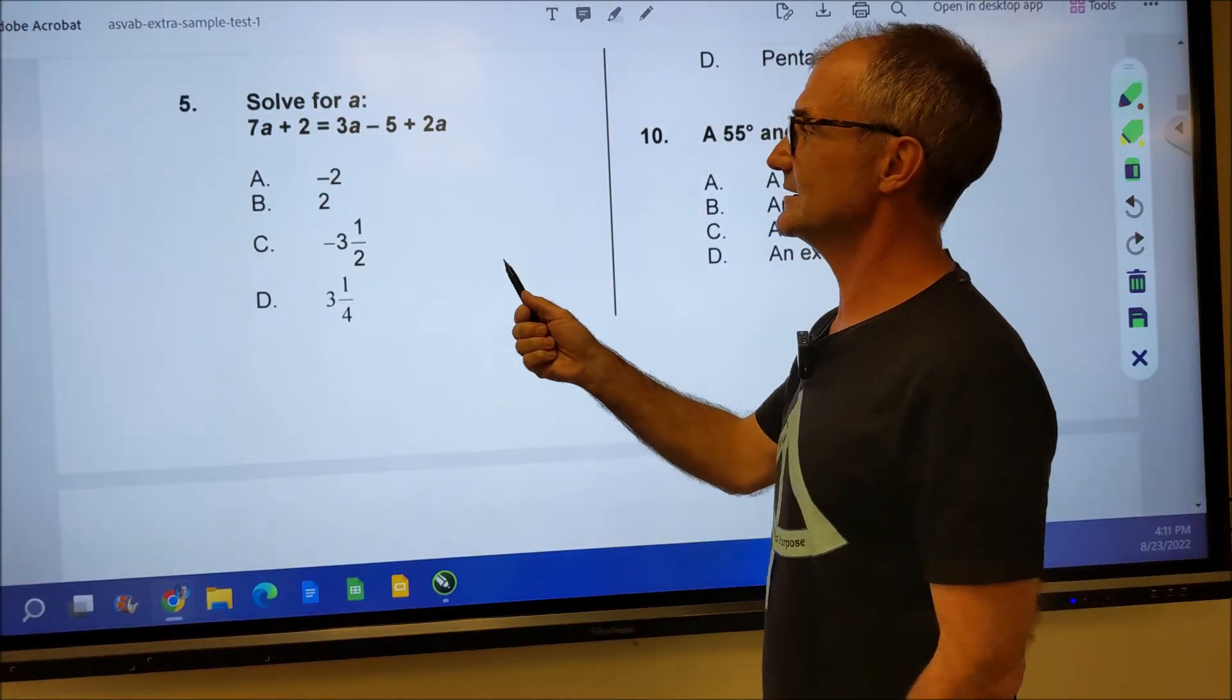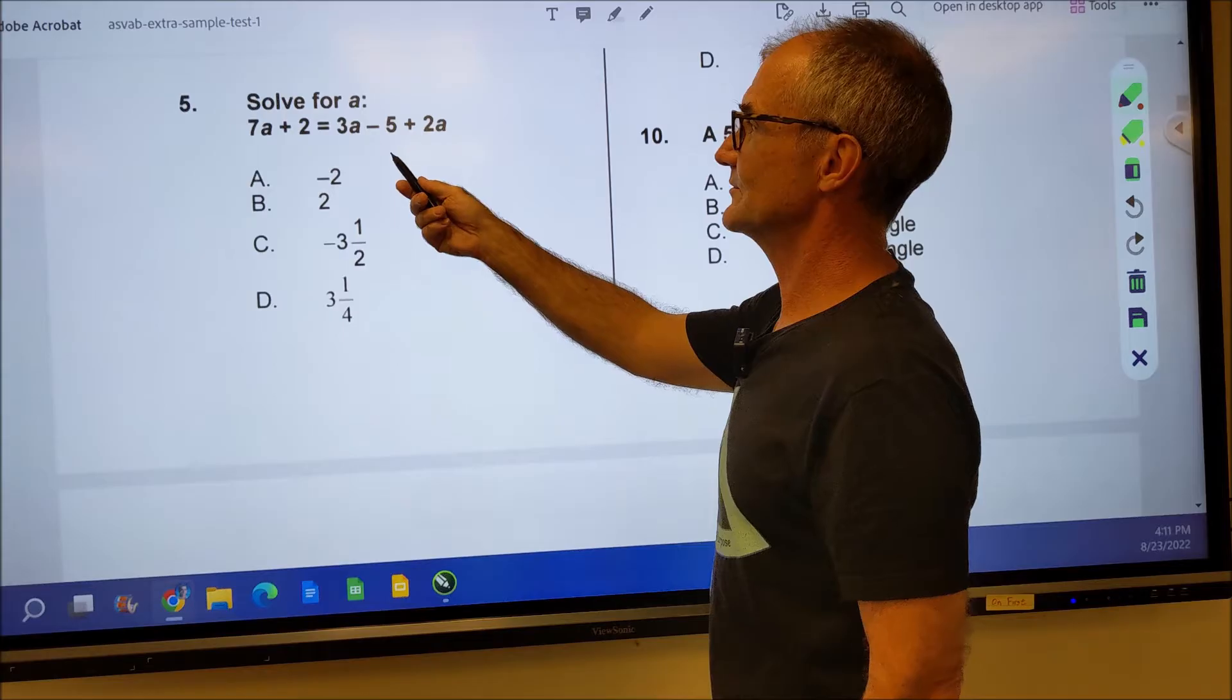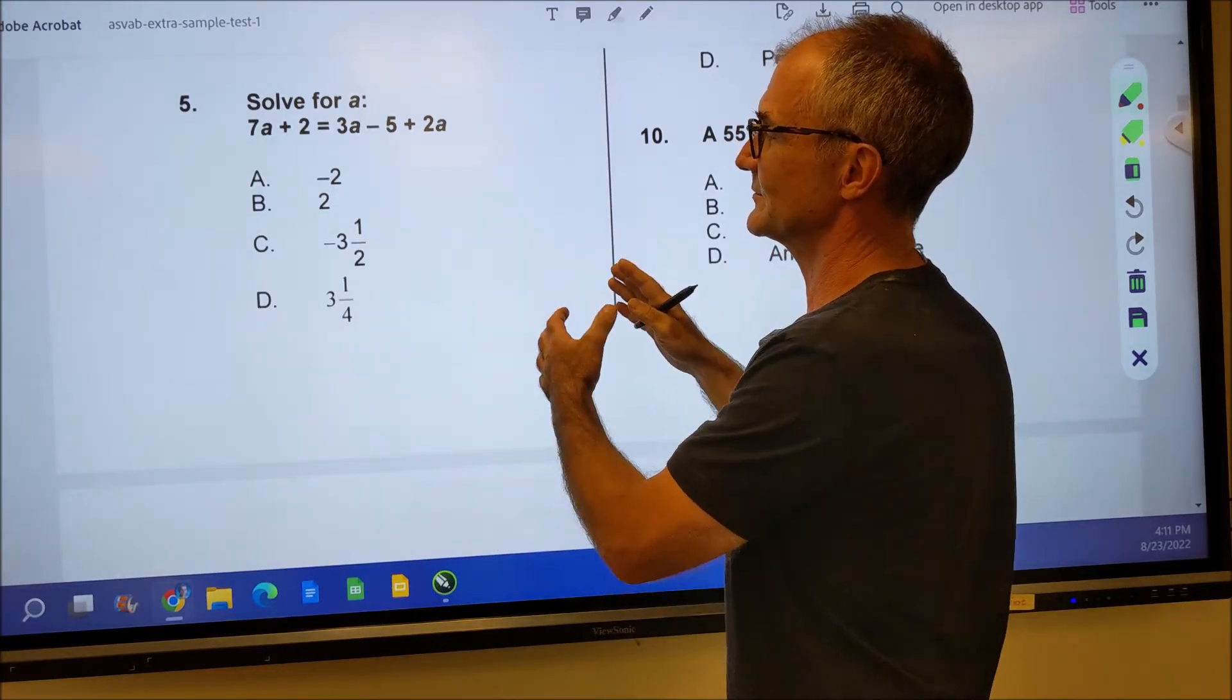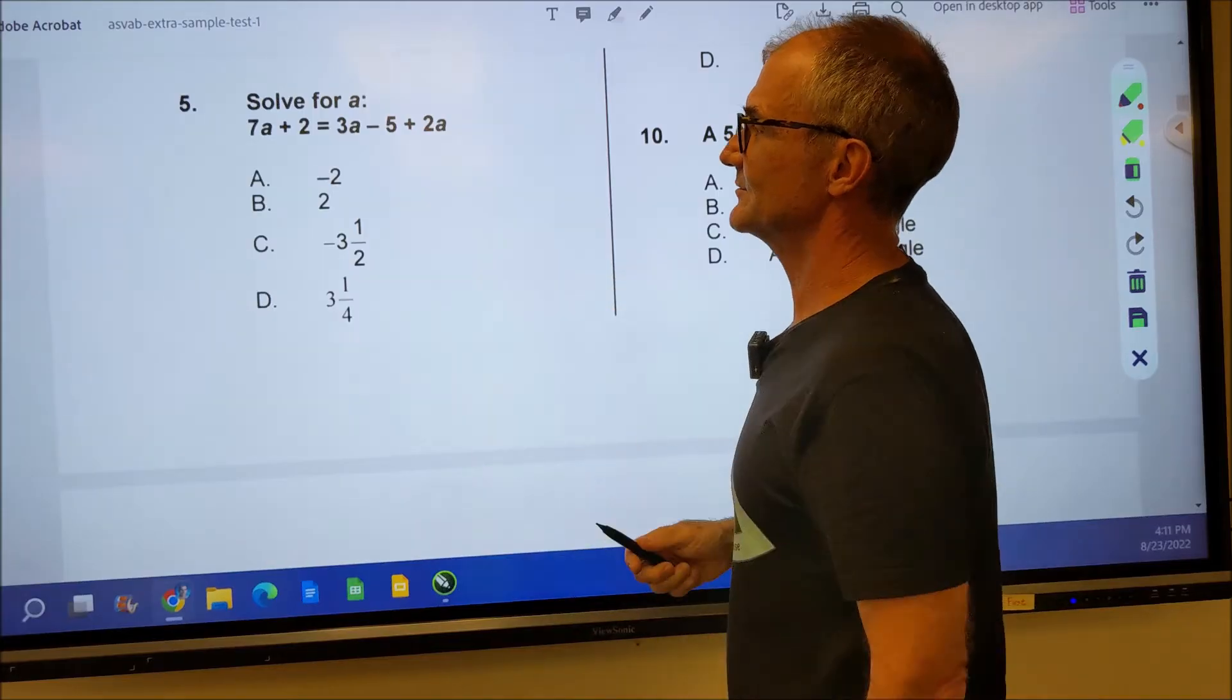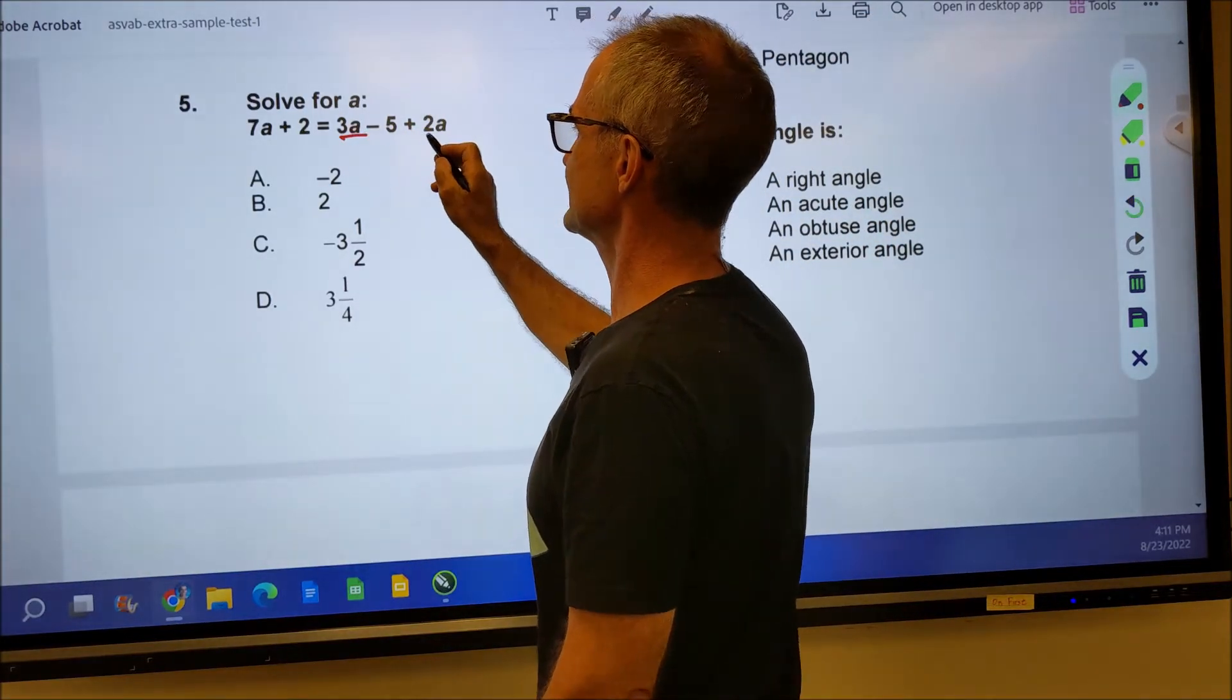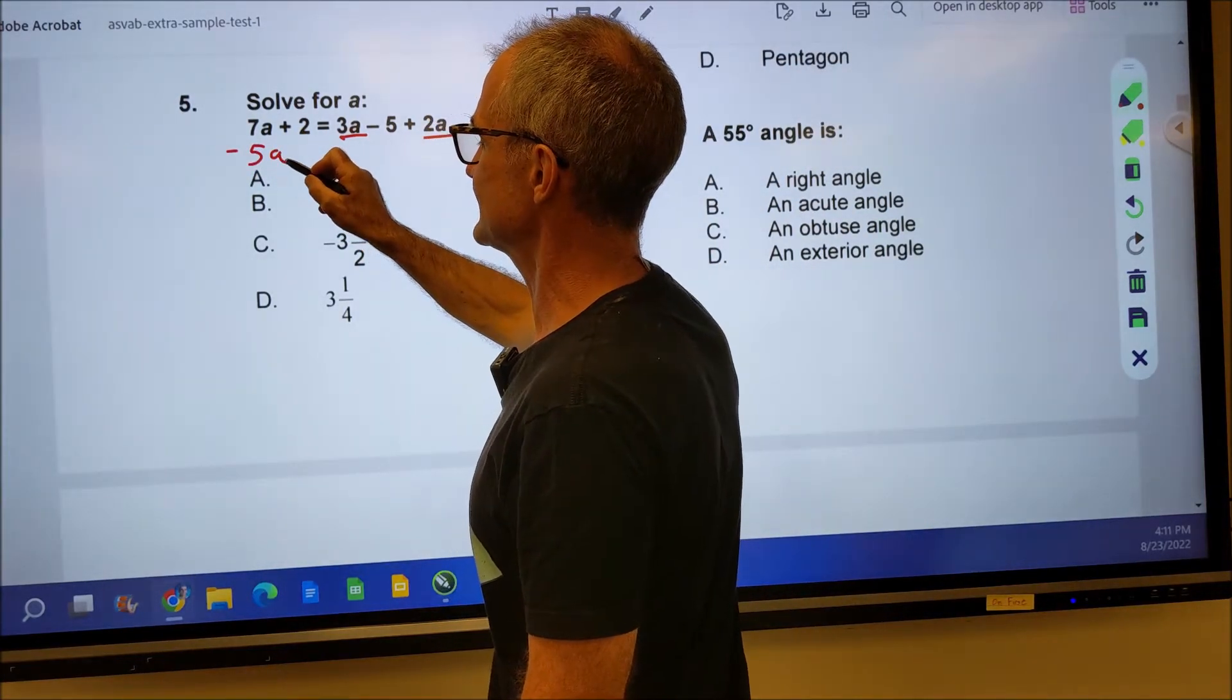A little algebra review right here. You have to get the variables by themselves. There's only one variable A. So I'm going to get all of those A's on the one side and numbers by themselves. I'm going to divide through to get the solution. So I have a 3A and a 2A added together to give me 5A.